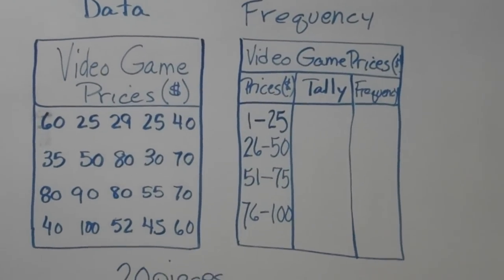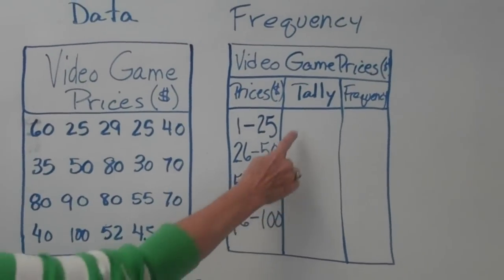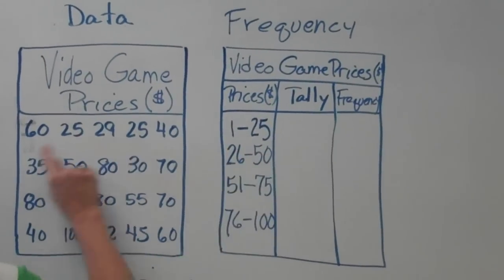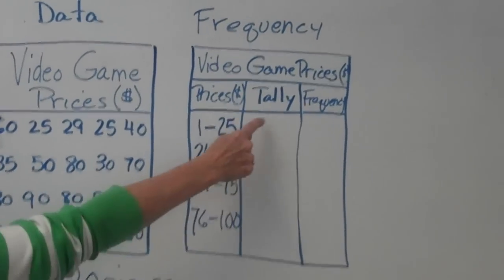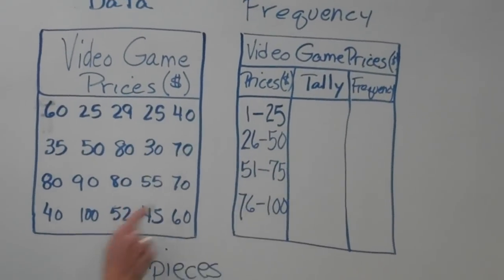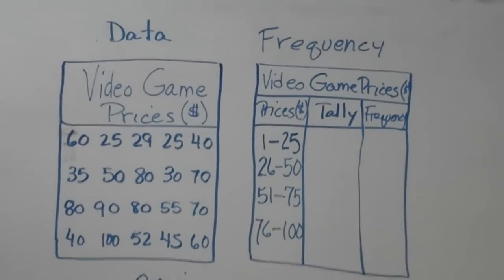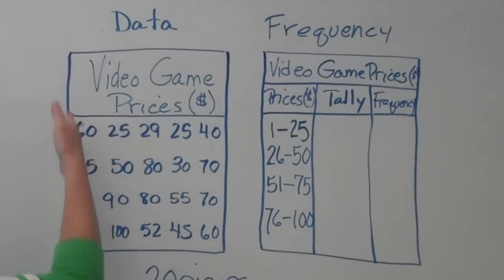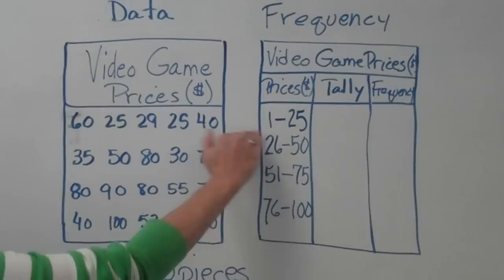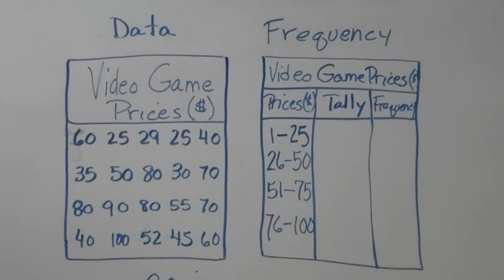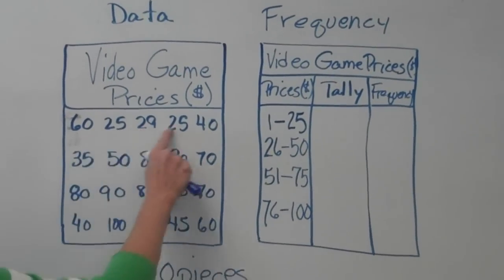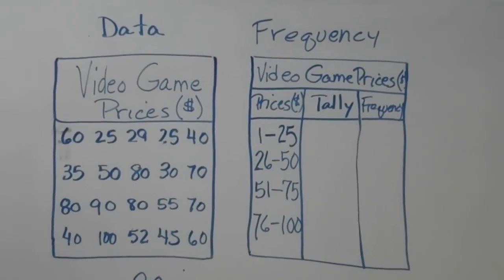Now, we're going to take that information here and we're going to tally any piece of data from our data table, make a mark every time we see it in our table. Do this in an organized fashion. Either you could go straight down your columns or straight across the rows. We're going to go straight across the rows and we're going to cross out every time we make a tally mark.